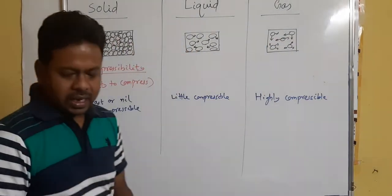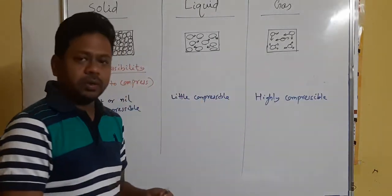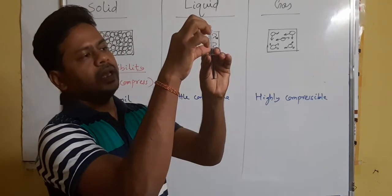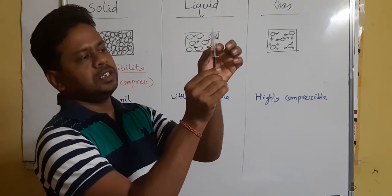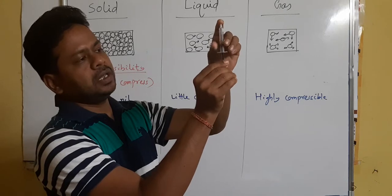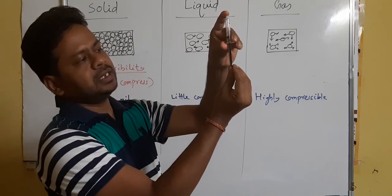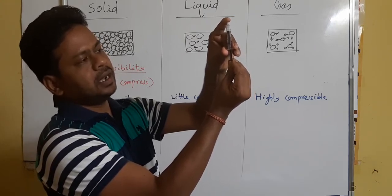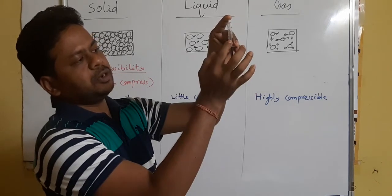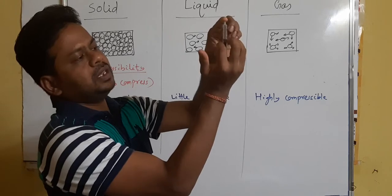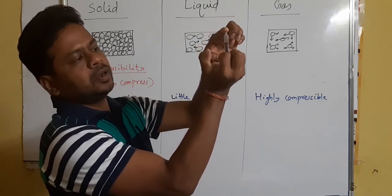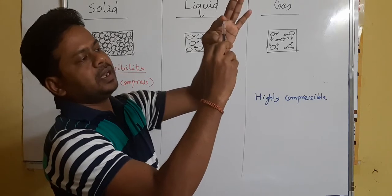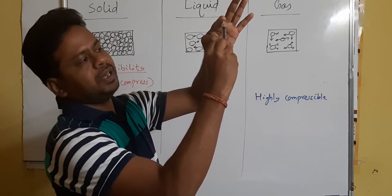Gas is highly compressible because there is much more space between the particles. You can demonstrate this with a syringe — pull the piston so air is inside, keep your thumb over the opening and press. You can see the air is easily compressed, and when you release it comes back to the original position. This shows air can be compressed because of the large spaces between gas particles.